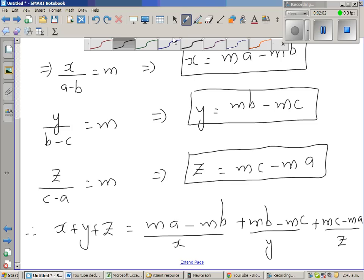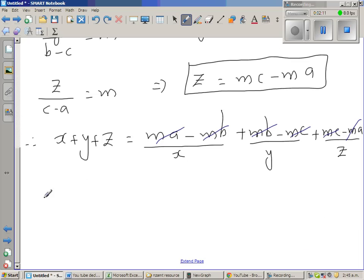So what gets cancelled? Minus m b plus m b minus m c plus m c minus m a plus m a. So therefore I can say x plus y plus z is equal to 0.